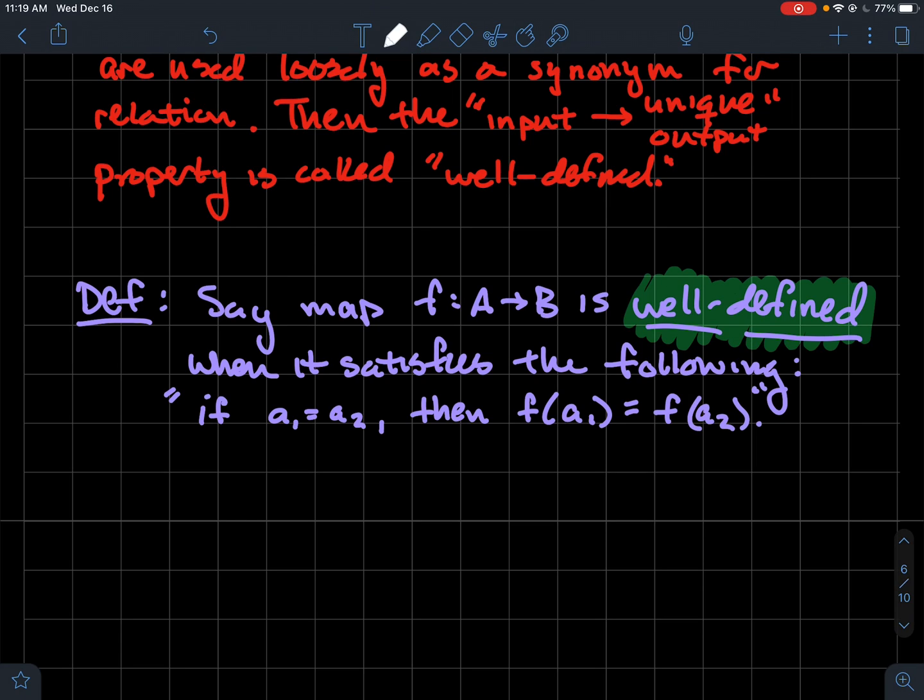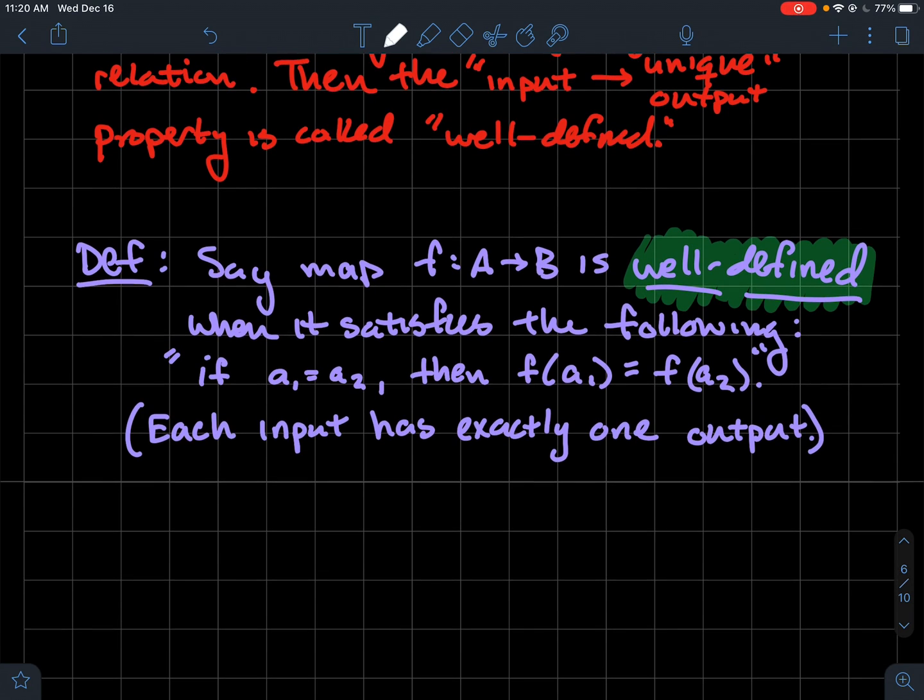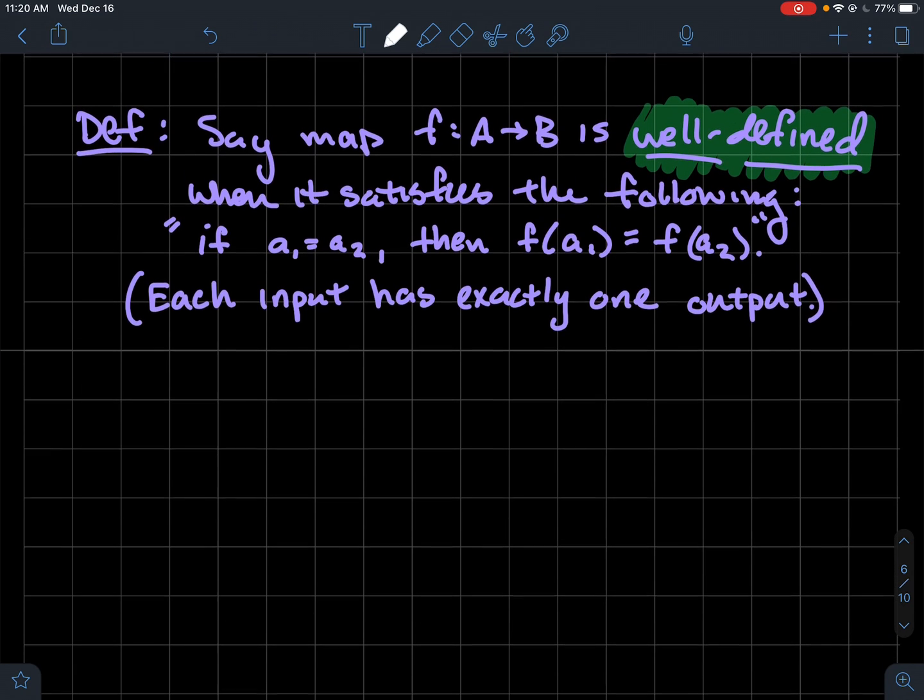Each input has a unique output is what that's trying to say. That's just kind of in symbols what you would take to be the definition of a function from like a college algebra class. That's telling us about the vertical line test, if you want to think of it that way, from college algebra in that context that you've got a function from R to R. But just more generally here, each input has a unique output. Each input has exactly one output is another way to say that.